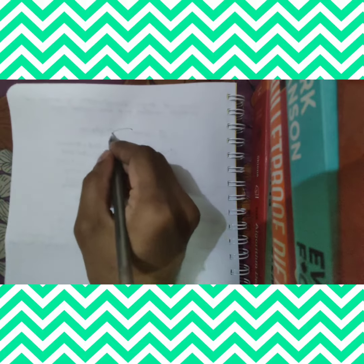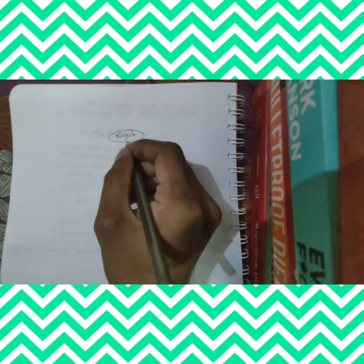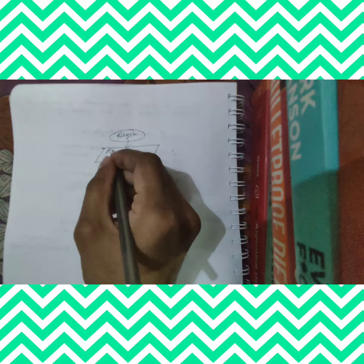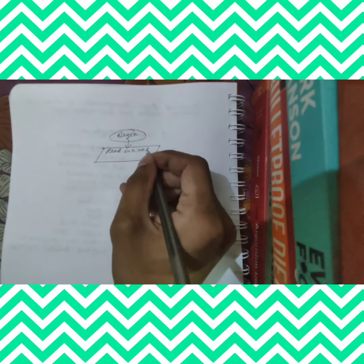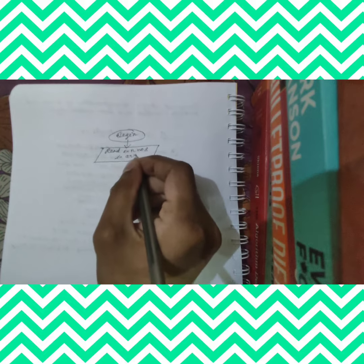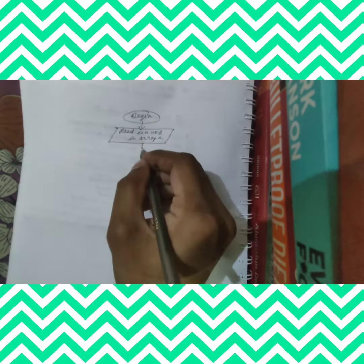Today we will learn about the flowchart of bubble sorting. How it will proceed? First, you have to write 'begin'. Then after that, it is coming to the next point which is called 'read n numbers in array a'.